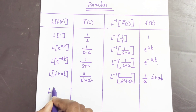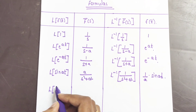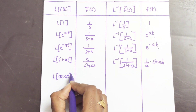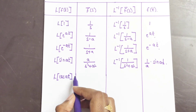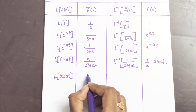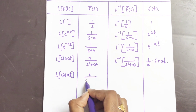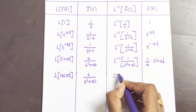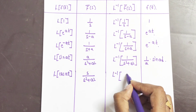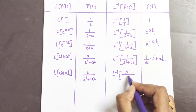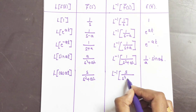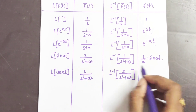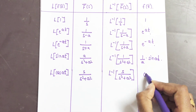Coming to the next formula — Laplace of cos(at). We know the formula of Laplace of cos(at) is s/(s² + a²). So applying the inverse Laplace transform to s/(s² + a²), the answer is f(t) = cos(at).